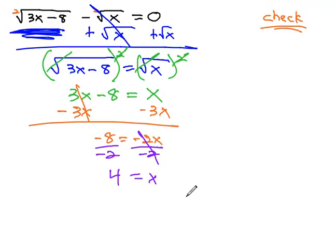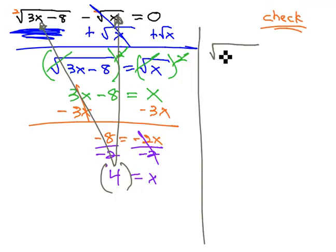Of course, before we say that's our final answer, before we're done, we want to be sure we check our answer by taking that positive 4 and plugging it in for both of these x's in the original problem. So, checking it, we've got the square root of 3x, or 3 times 4, minus 8, minus the square root of x, or 4, and hopefully, that will equal 0.